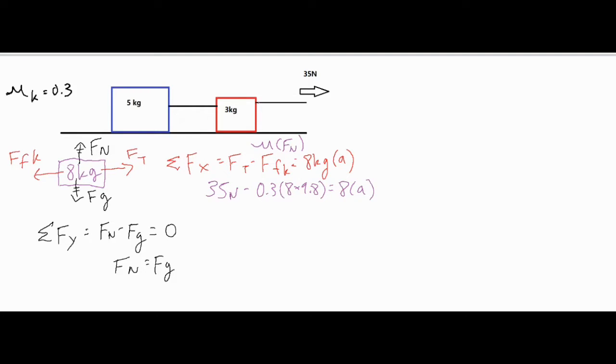If we take 35 minus the product of these, the product of these is 23.52 newtons, that equals 11.48 newtons total, equals the eight kilograms times the acceleration. Divide both sides by eight, and we have an acceleration of 1.44 meters per second squared.